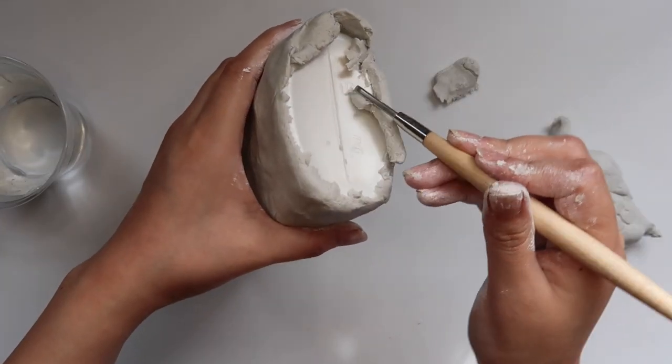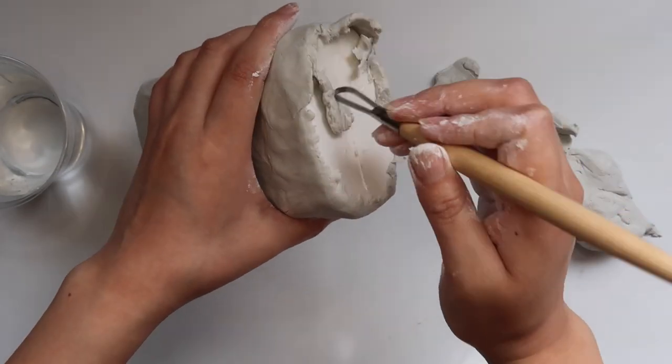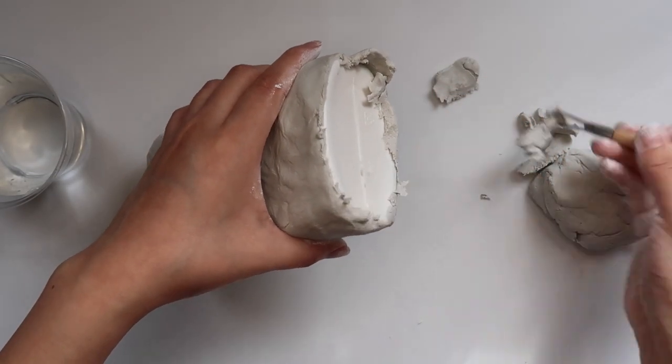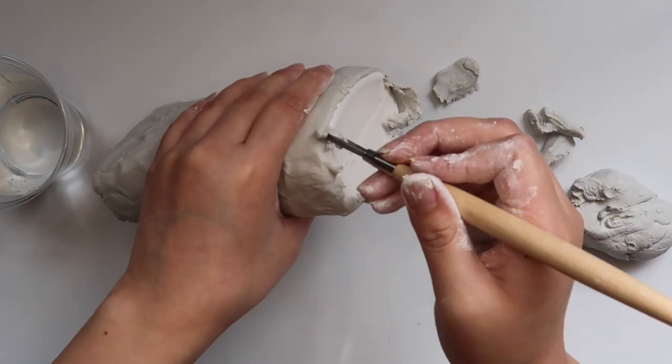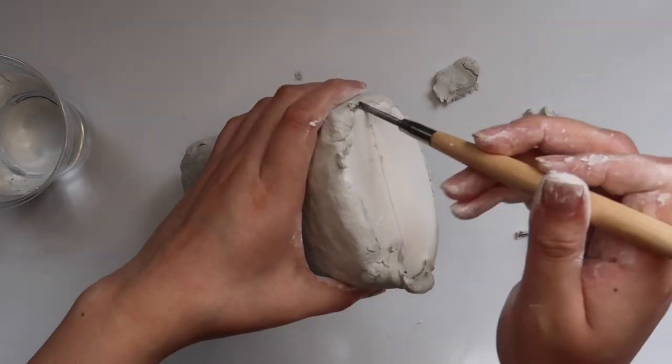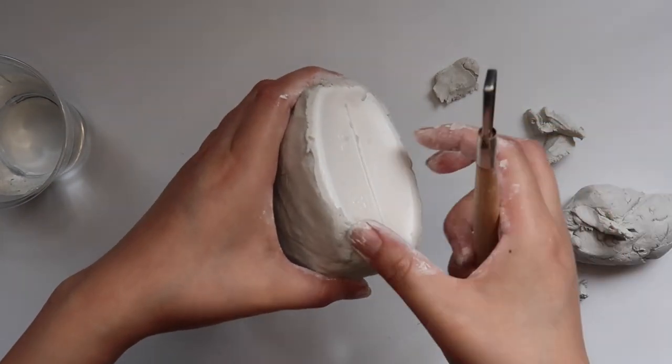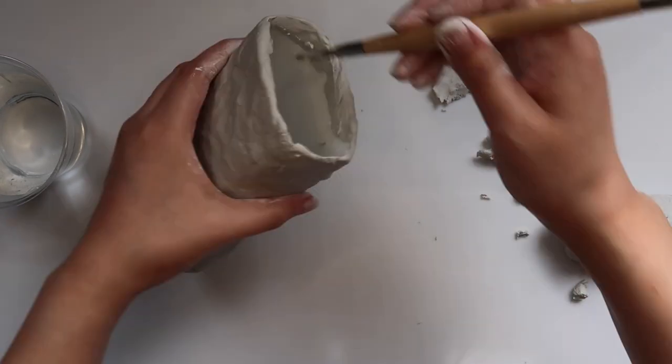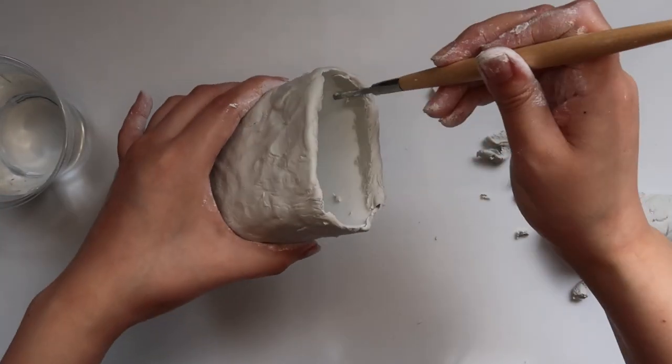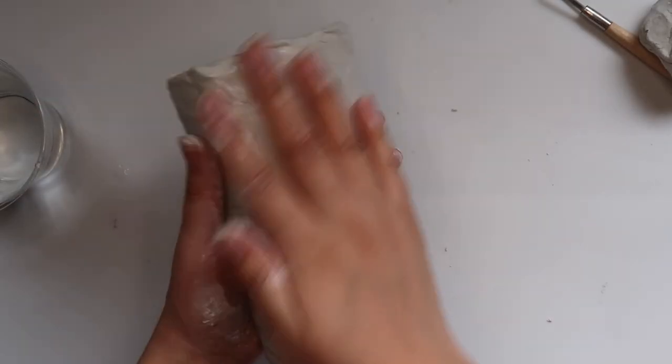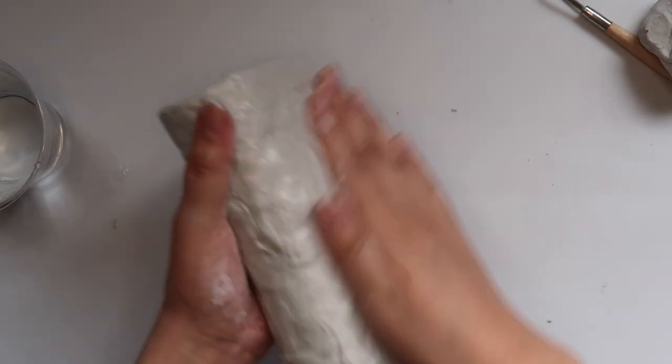Now that I have the whole bottle covered except the bottom, I'm gonna start scraping off the extra chunks that are around the bottom using my loop tool. I'm also gonna be scraping off the extra clay that's at the top of the bottle.